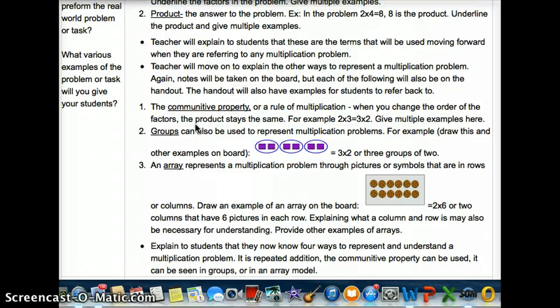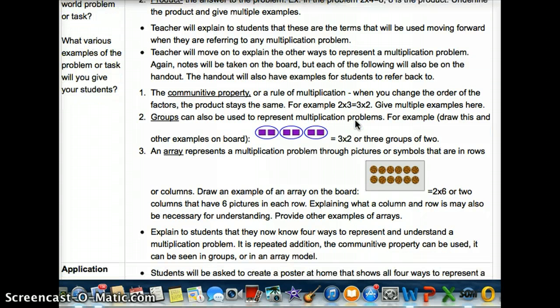First we'll talk about the commutative property and we'll explain that a property is simply a rule. So this is a rule of multiplication. When you change the order of a factor, the product stays the same. So for example, two times three equals three times two. Put that example on the board along with a few others until they seem to grasp the idea. Ask for examples from them as well.